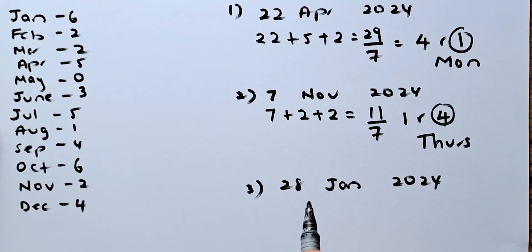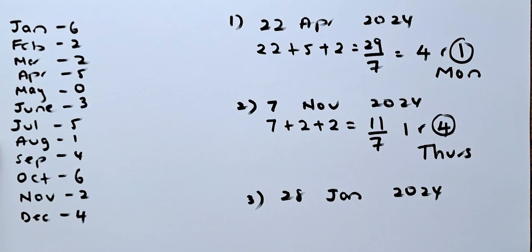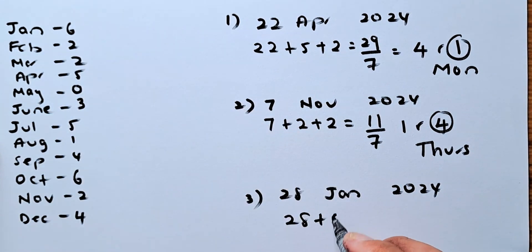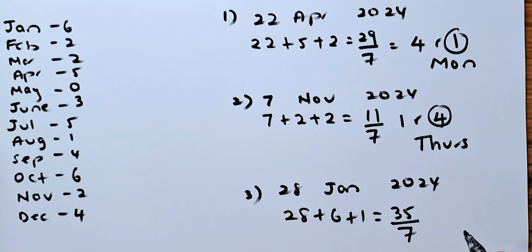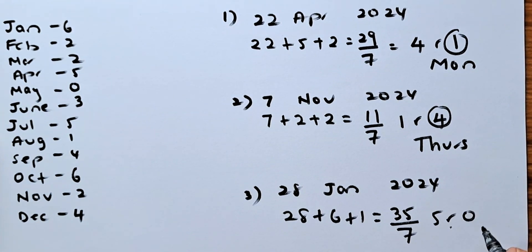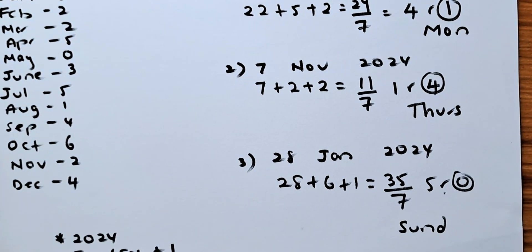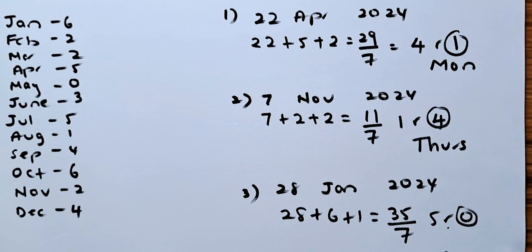Last but not least, we're going to calculate 28 January. So remember, January is going to be add 1. January and February is add 1. So we are going to calculate January. So 28 January, the code is 6. And you're going to add 1. You add them up, it's going to be 28 plus 6 is 34. 34 plus 1 is 35. 35 divided by 7, you're going to get 5, remainder 0. As I said before, remainder 0 means it's going to be a Sunday. So that is how you're going to calculate the day of the week in 2023 and 2024. Have a good day, everyone, and see you soon.